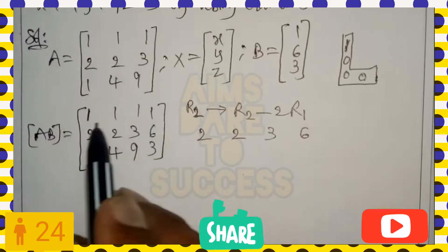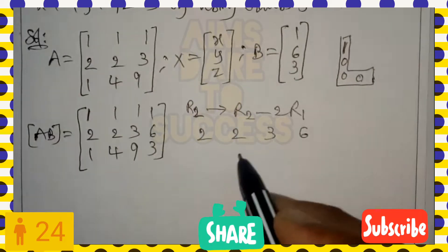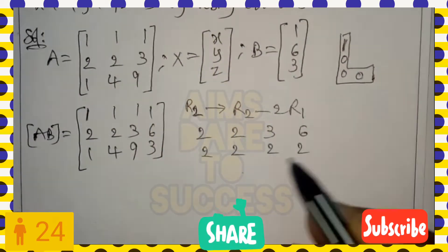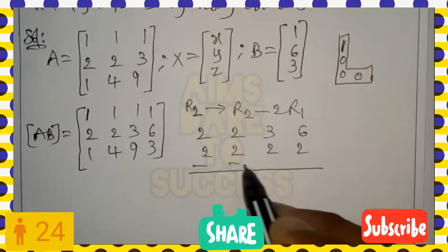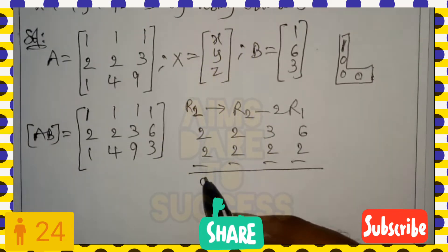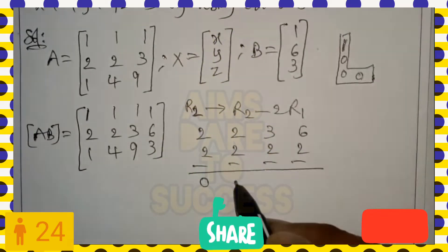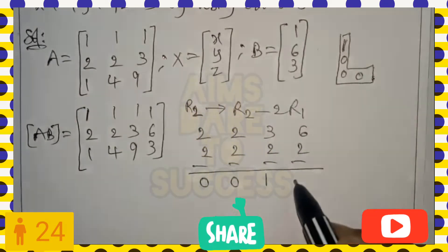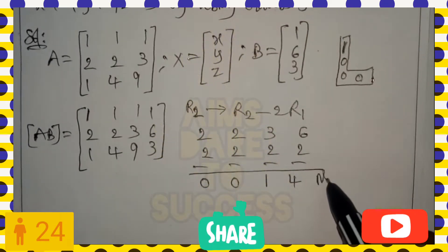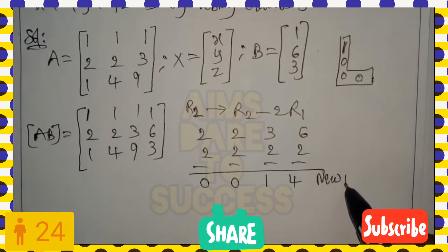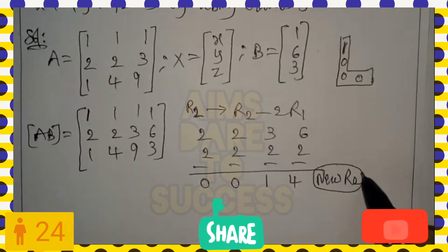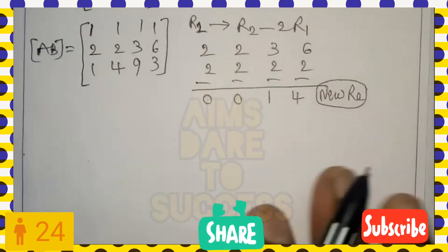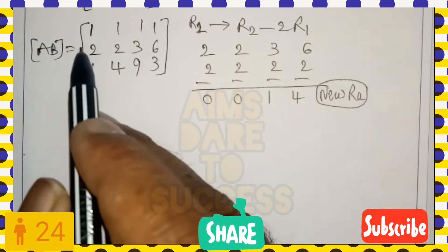Computing new R2: R2 is [2, 2, 3, 6], and 2 times R1 is [2, 2, 2, 2]. Subtracting: 2−2=0, 2−2=0, 3−2=1, 6−2=4. So new R2 is [0, 0, 1, 4].